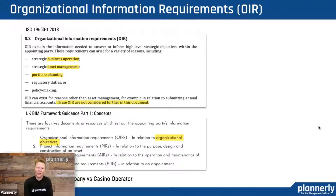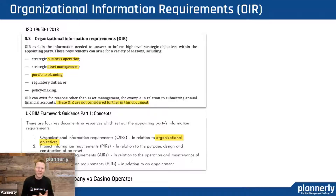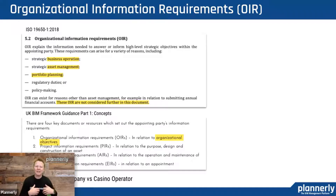The first one is organizational information requirements. Every company is different, and organizational requirements are the owner or the appointing party's requirements when it comes to their strategy — really why they get out of bed in the morning. Those requirements are going to be different between a technology company and a casino operator. A technology company might be very interested in portraying a very green and forward-looking approach, whereas a casino operator is going to be focused on opening the building, the client experience, and path through a building — understanding that in a lot more detail.